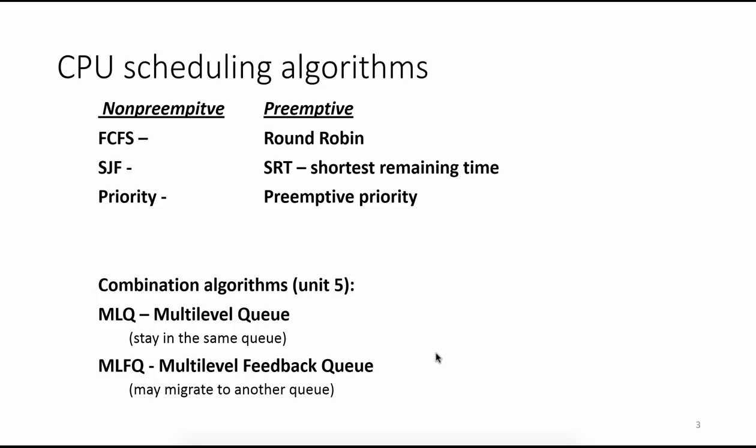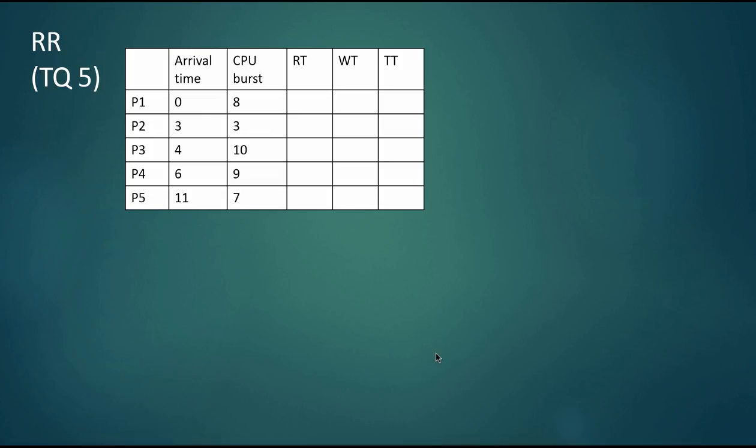We will be doing the preemptive algorithms: round robin, shortest remaining time (which is shortest job first preemptive), and preemptive priority. Let's get started with our first exercise.